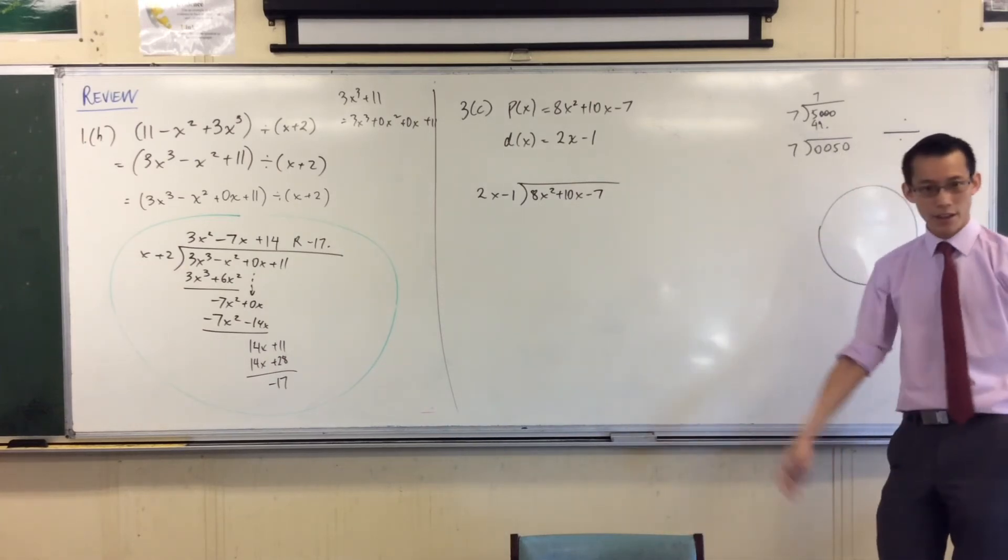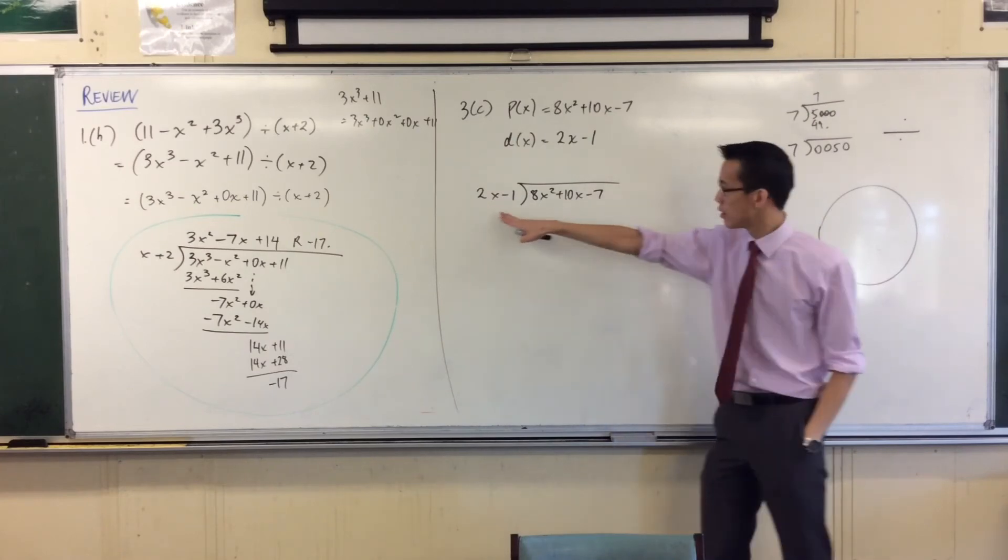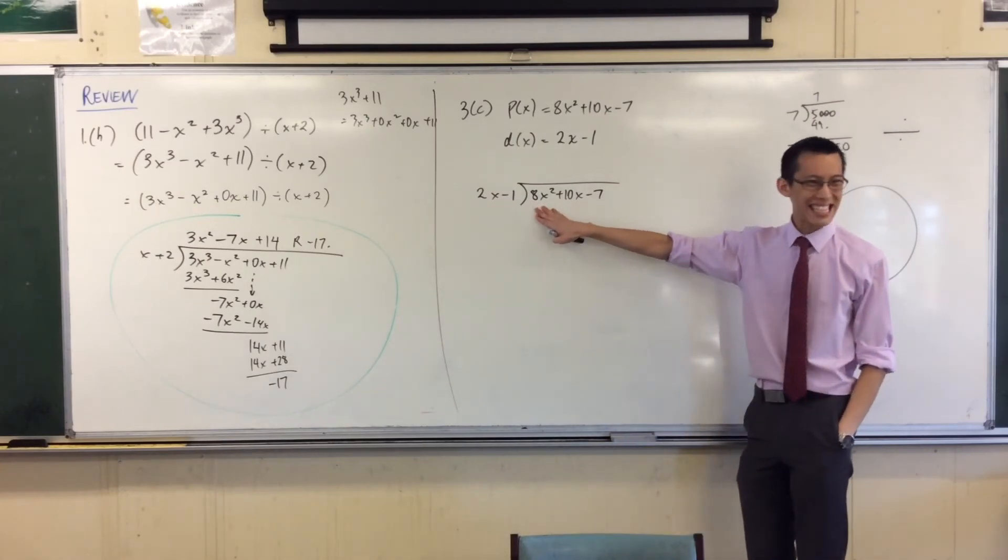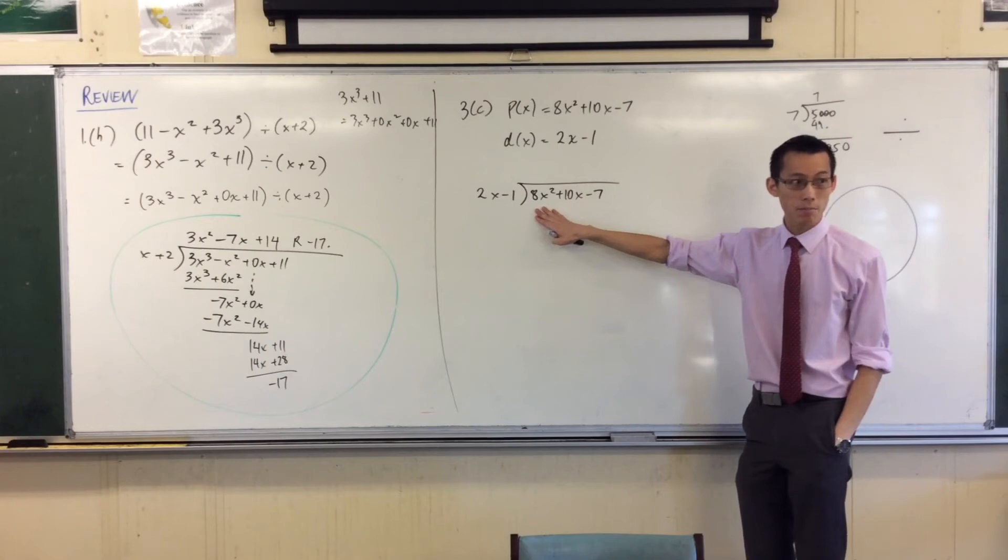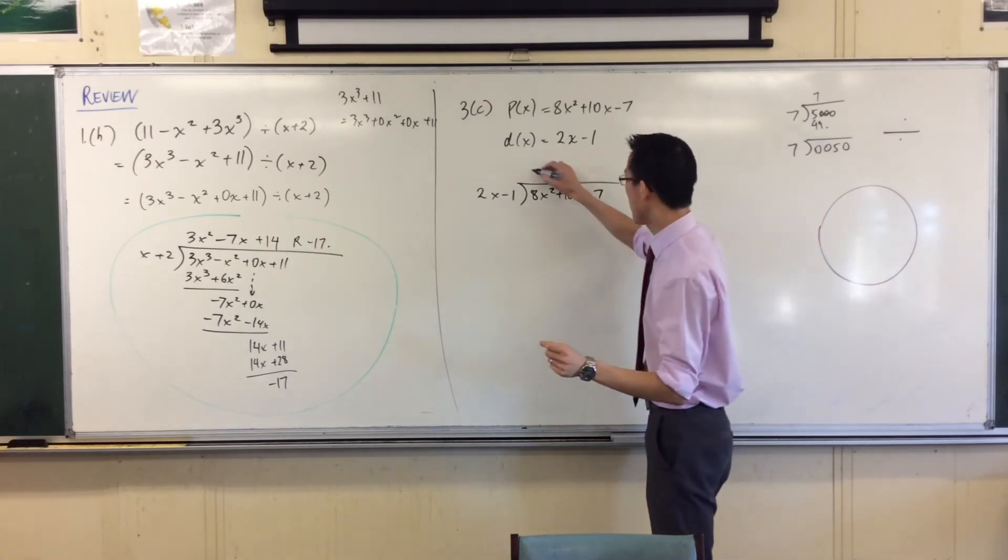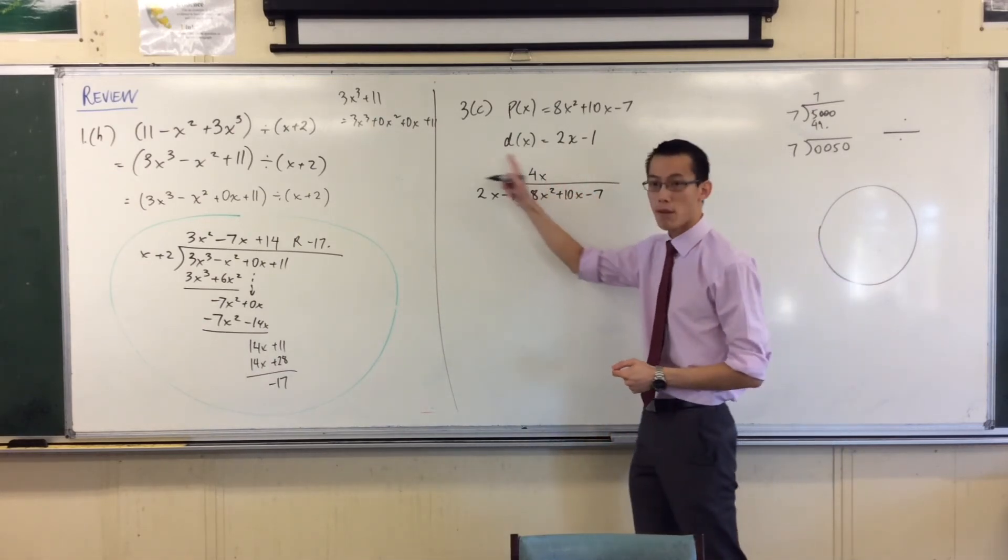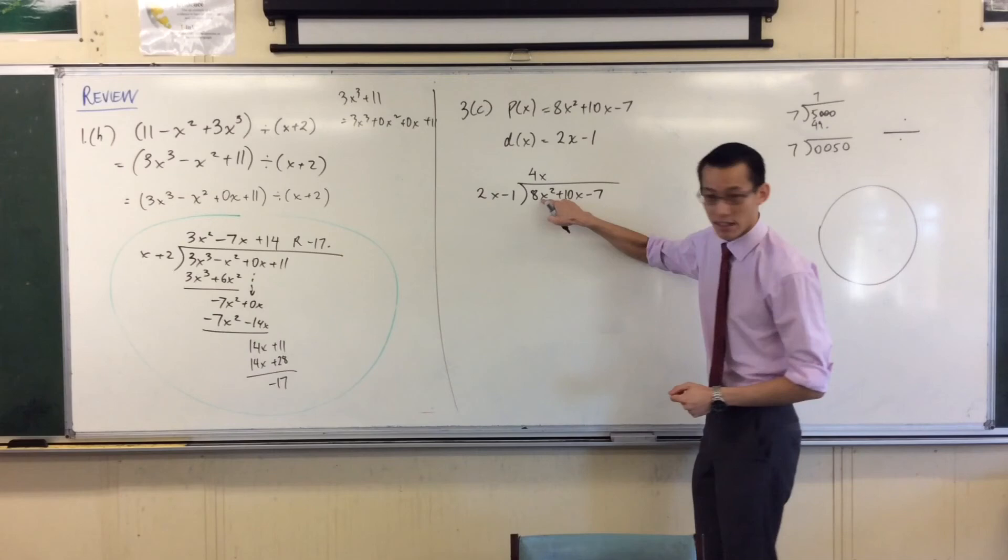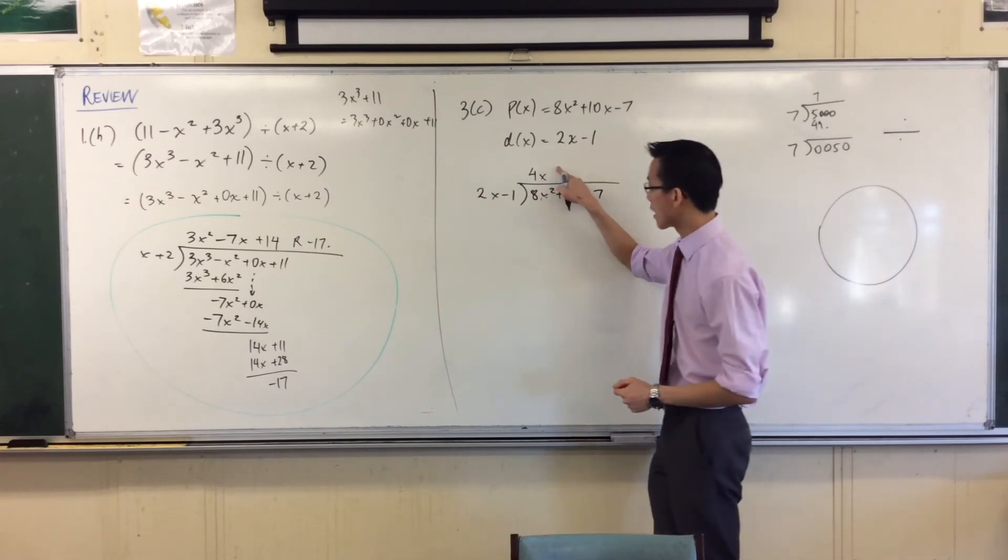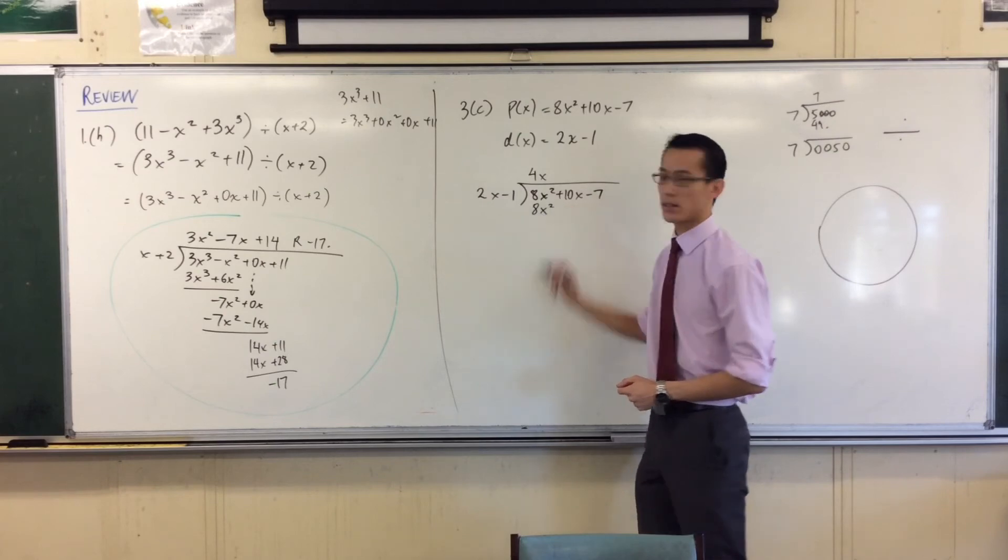It's not any harder. You just keep this extra process in your mind. So how many times is 2x going to 8x squared? When I divide this by this, what do I get? The answer is 4x, right? 4x. I know that because when I choose to multiply back, I'm supposed to get exactly the same thing under here. 4x times 2x is going to be 8x squared.